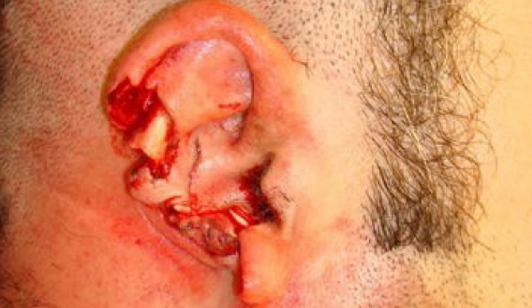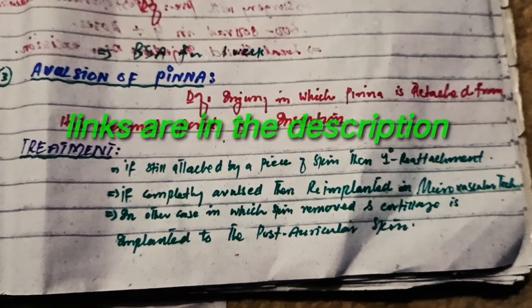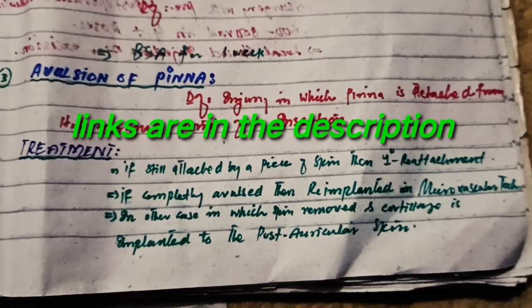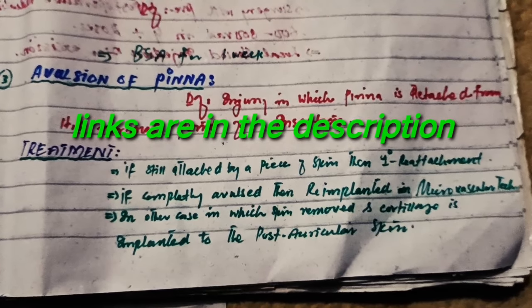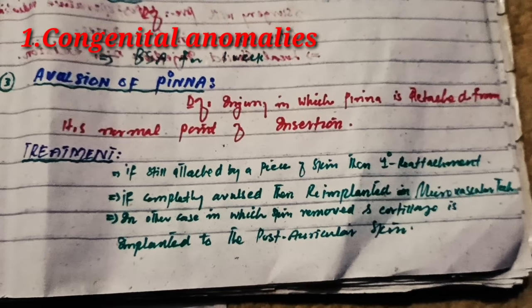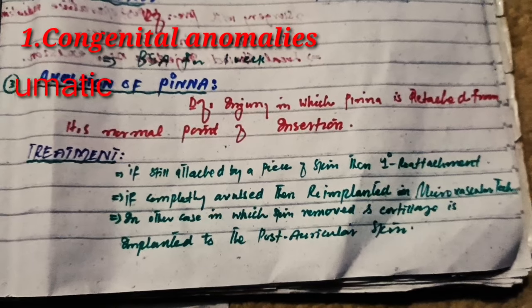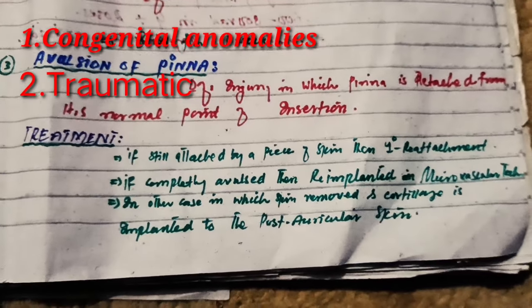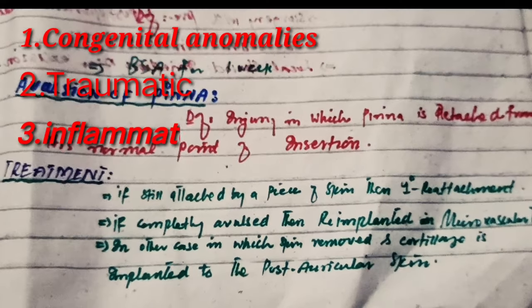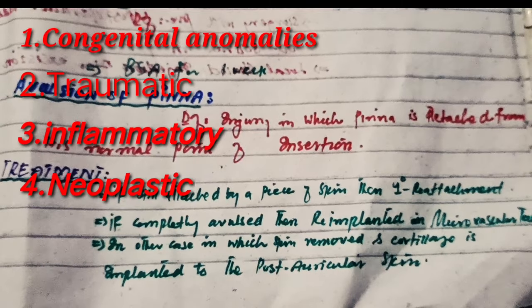In the previous few videos I have already talked about the anatomy of the auricle and the congenital anomalies of the auricle. I discussed that there can be four disorders of the auricle: the first is congenital, which I have already talked about; the second is traumatic, which I am currently going to discuss; the third is inflammatory; and the fourth is the neoplastic condition.